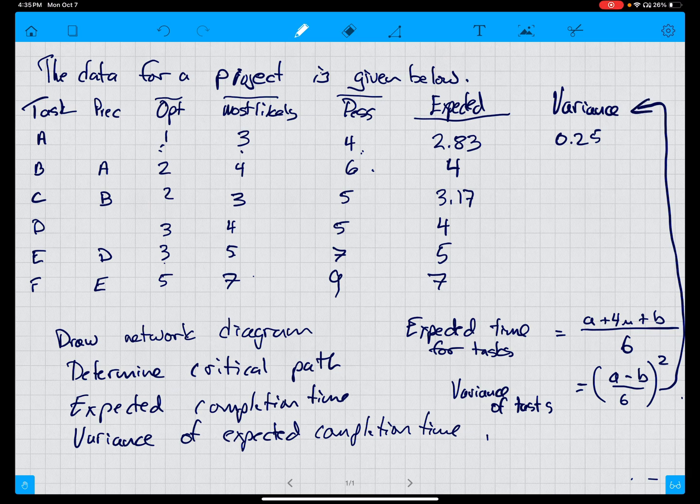Similarly, we would then calculate it 0.44 is 6 minus 2, which is 4, divided by 6, and then squared is 0.44. We would have 0.25, 0.11, 0.44, and 0.44.